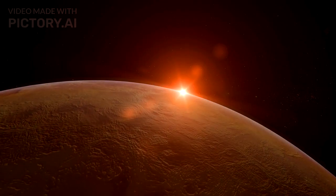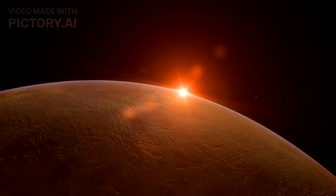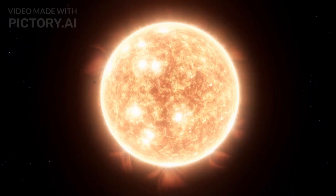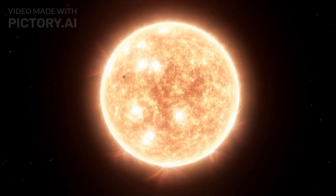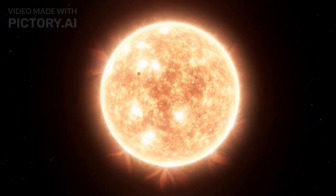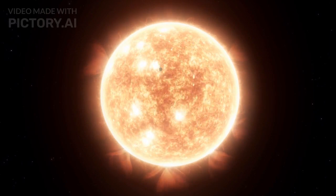Venus is full of cosmic paradoxes, and one of the most mind-blowing is its rotation. This sizzling world takes a whopping 243 Earth days to complete a single rotation on its axis, way slower than any other planet in our solar system.